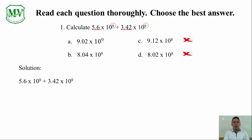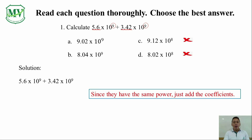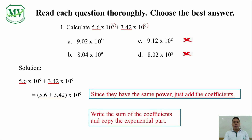Since our exponential notations already have the same power, we do not need to rewrite either number. Now, add the coefficients — the power of 10 stays the same. Write the sum of the coefficients, that's 9.02, and copy the exponential part. Our final answer is 9.02 x 10 raised to the power of 9. And that's letter A.